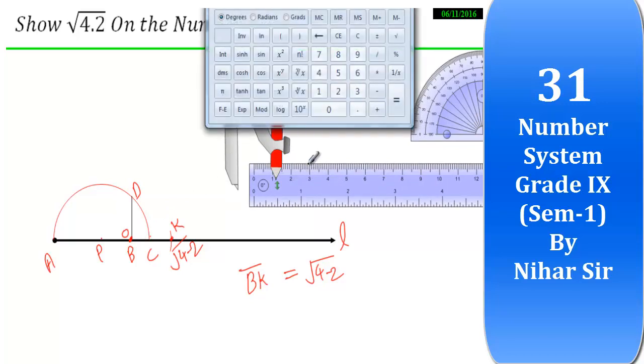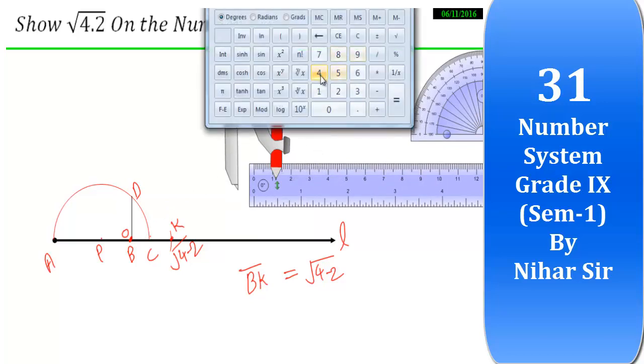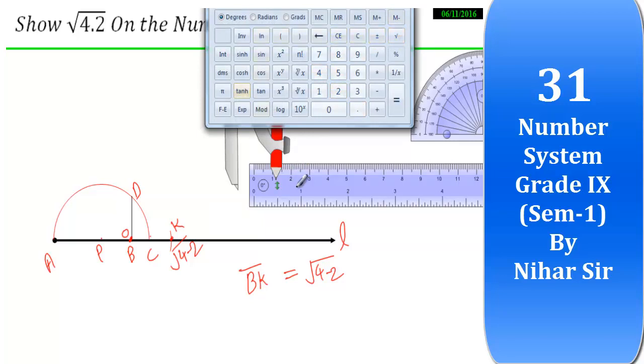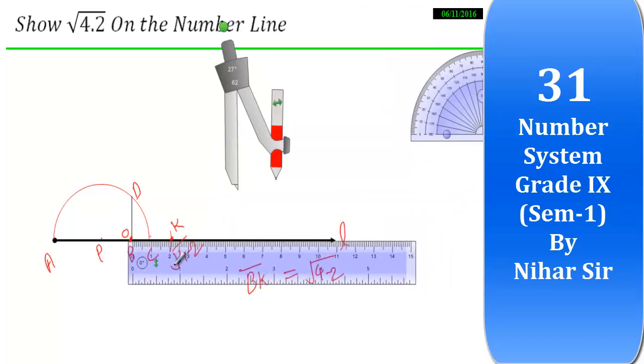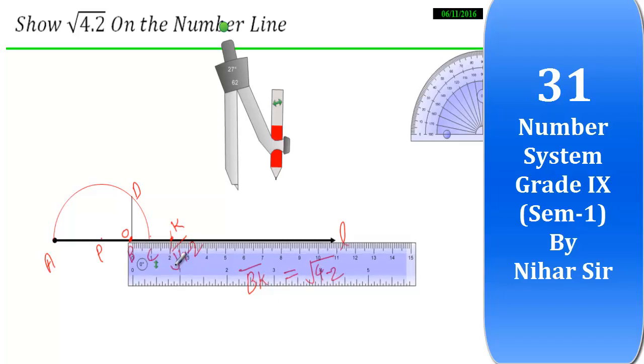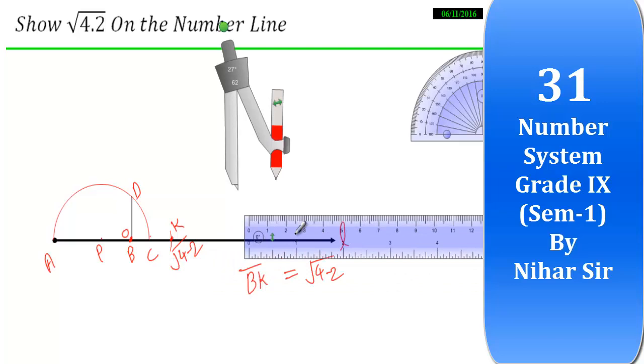And something interesting, if you take the root of 4.2, it's 2 point something. So your line will be of the same measurement. If you check it out, it's 2 point something, so it's between 0 and 1. If you look carefully, your diagram is perfect.